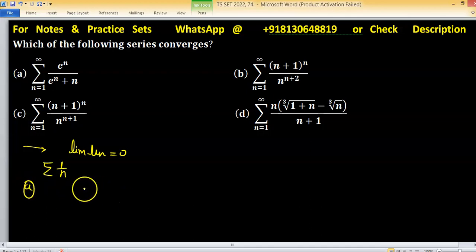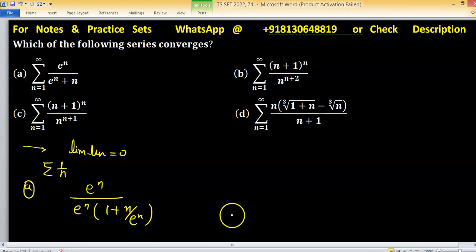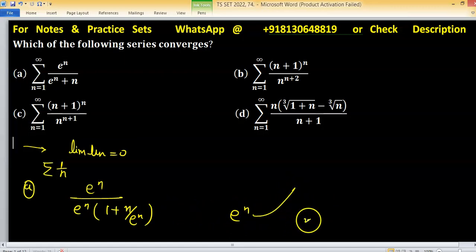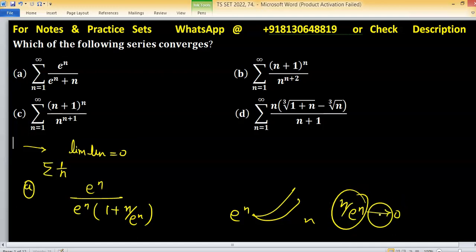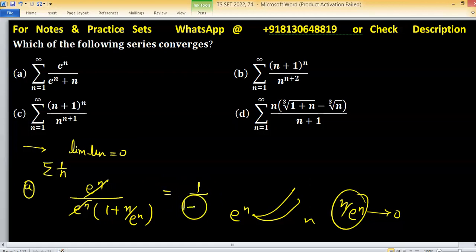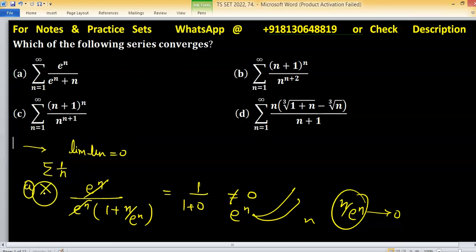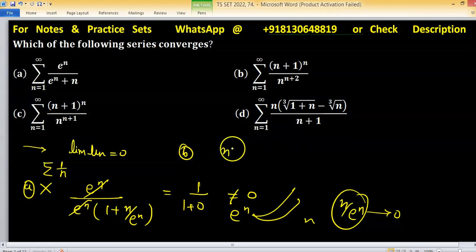Check option A: take a^n common from the denominator, we have 1 plus n/a^n. Since a^n increases faster than n, then n/a^n tends to 0, and a^n cancels out, so we have a limit equal to 1, which is not equal to 0. If the limit is not equal to 0, we can say option A is not a converging series.